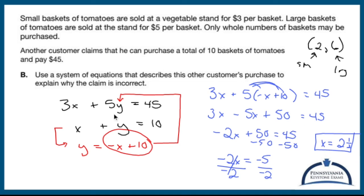I could solve for y but I don't need to because we need to use a system of equations that describes this other customer's purchase to explain why his claim is incorrect. His claim is incorrect because he bought two and a half baskets that are small baskets. You might be like, well what's the problem with that? Only whole numbers of baskets may be purchased.